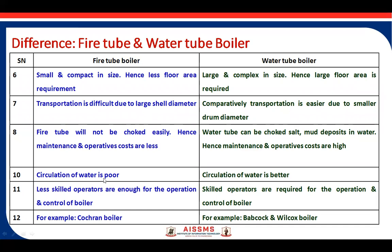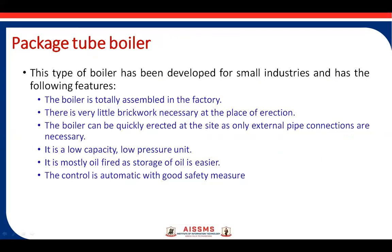Circulation of water in fire tube boilers is generally natural and therefore poor, whereas in water tube boilers pumps are used along with better tube arrangement, resulting in better water circulation. Less skilled workers are required to control and operate fire tube boilers. Examples of fire tube boilers include the Cochran boiler, and examples of water tube boilers include the Babcock Wilcox boiler.